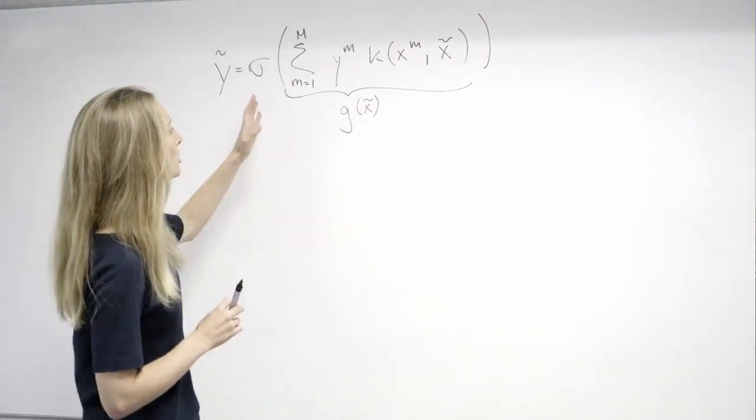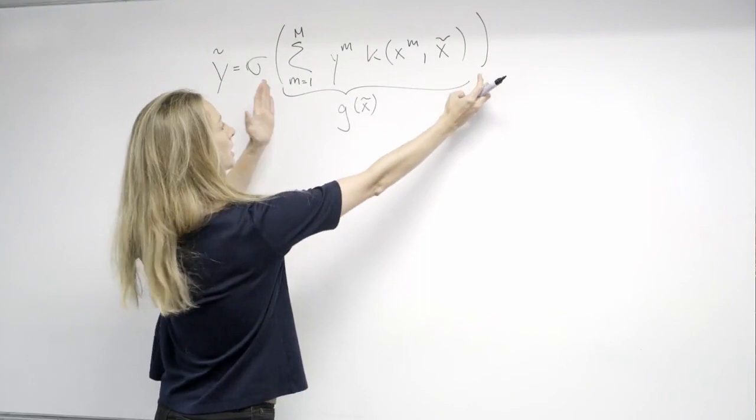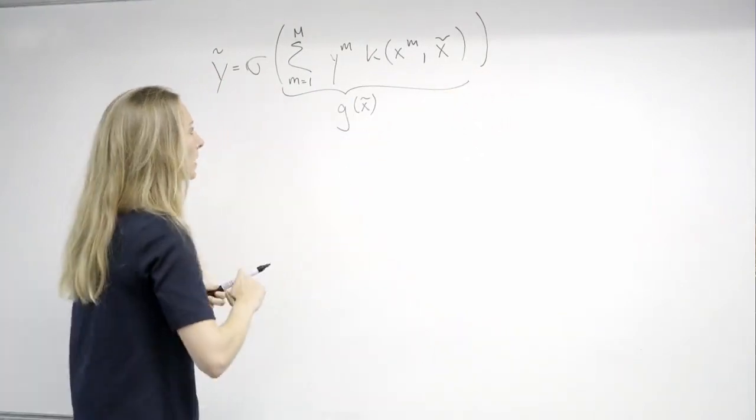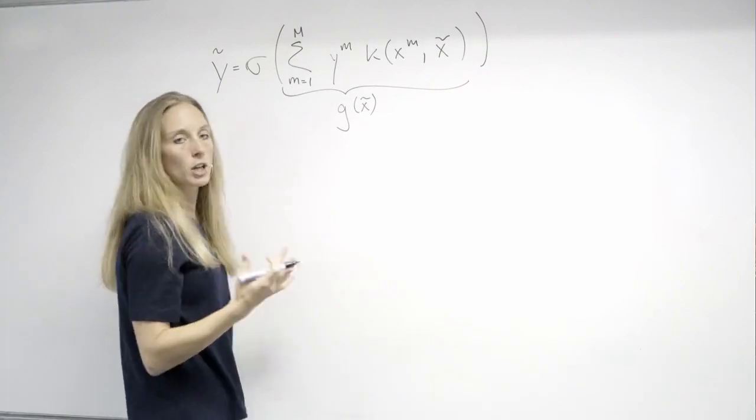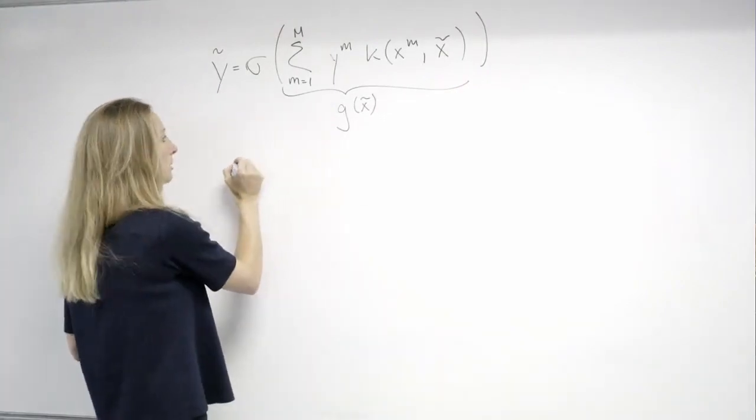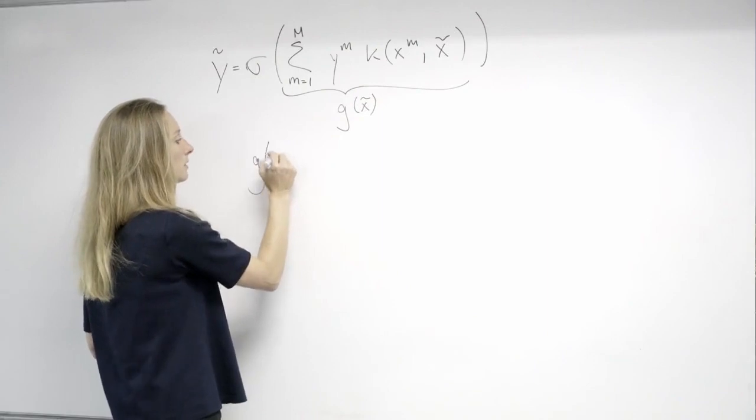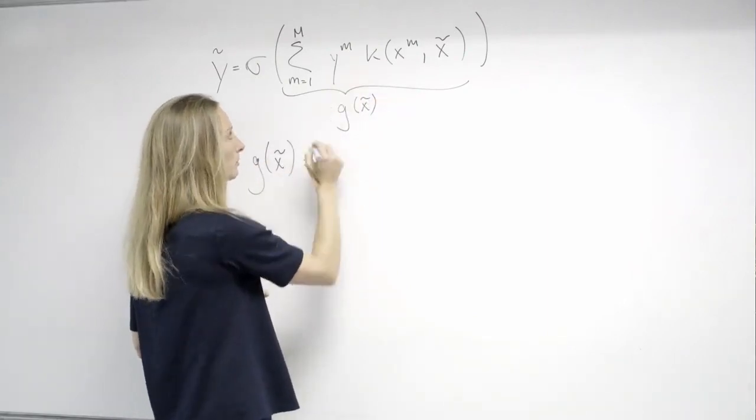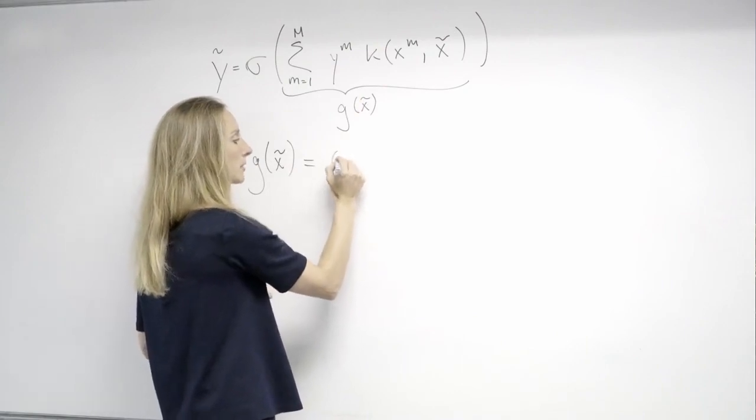Just to illustrate what I was talking about earlier. If this is our classifier and we call whatever is in the threshold function g of x tilde, let us say we only have two data points, two of class minus one and two of class one.